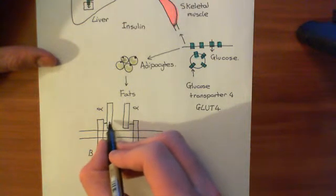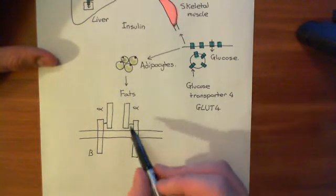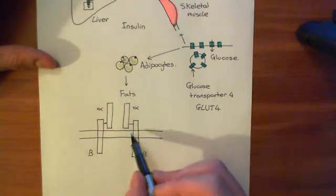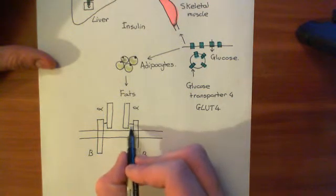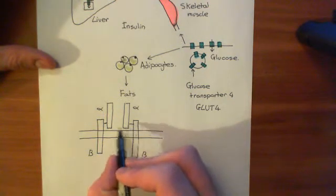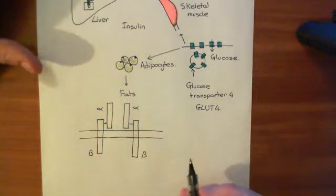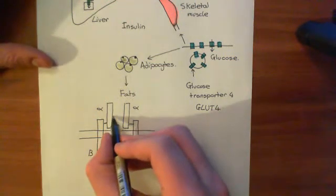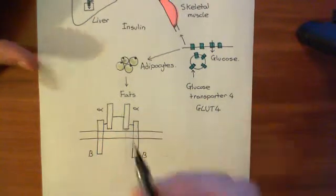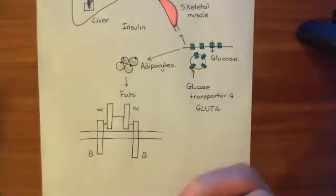This alpha subunit and this beta subunit are linked by disulfide bonds — and there are far more than one. This alpha and beta subunit are identical to the other alpha and beta subunit. So both pairs are linked by multiple disulfide bonds, and finally the two alpha subunits are also linked by multiple disulfide bonds.